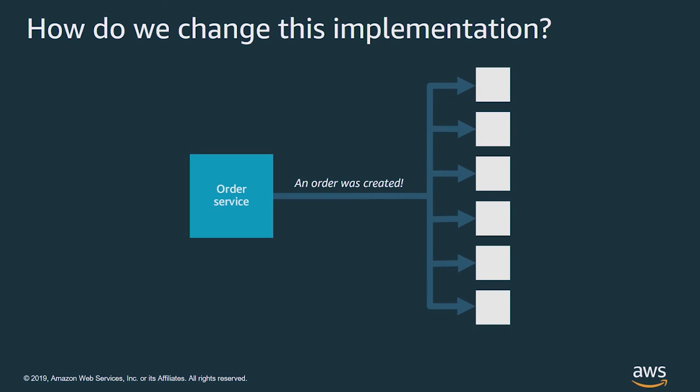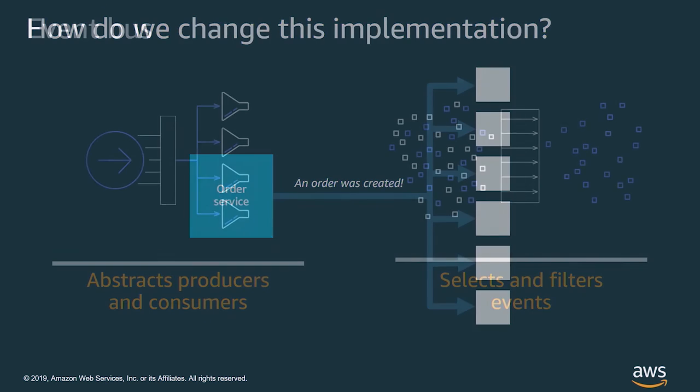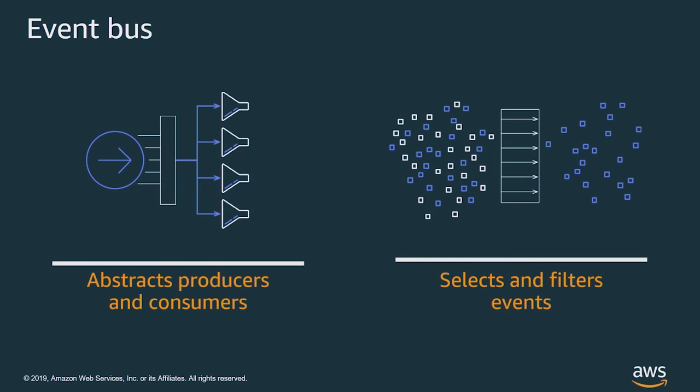But how do we actually implement all of this? How do we pass information from the order service to all these downstream systems without calling them directly? For that, we need an event bus. This provides an endpoint where an event producer can send events. The router manages directing and filtering those events to the appropriate downstream consumers. Consumers can get the events they care about reliably while the producers remain decoupled.